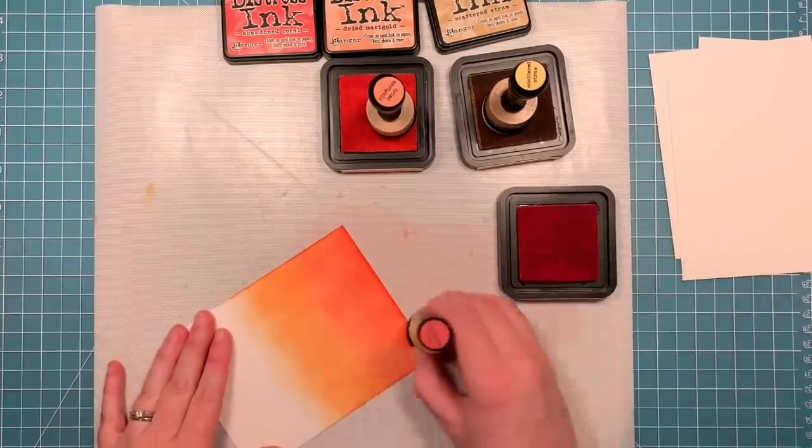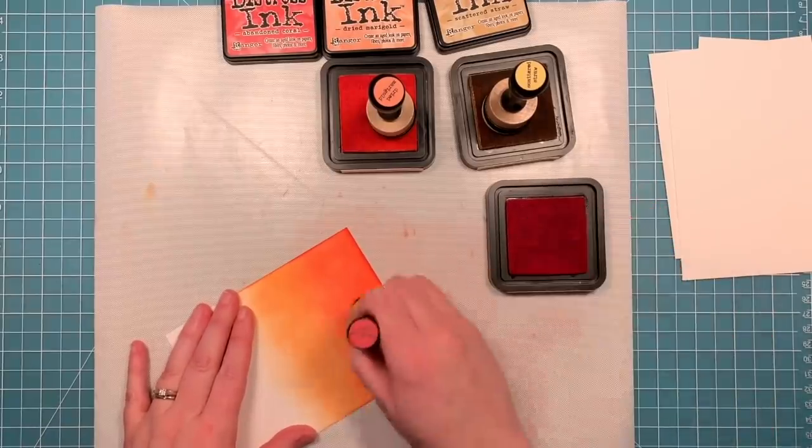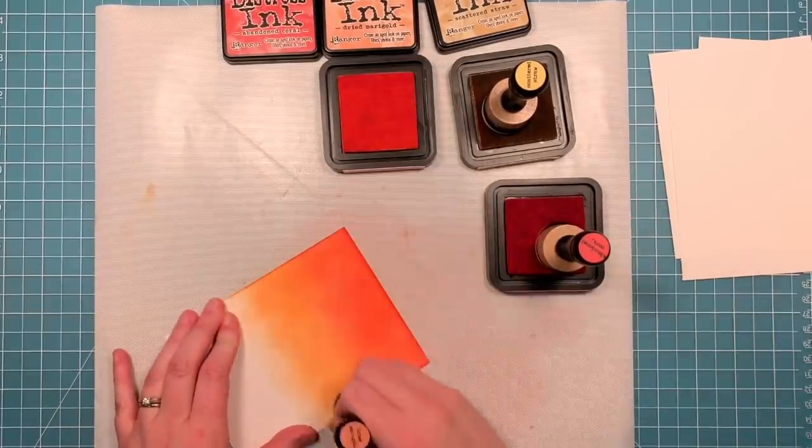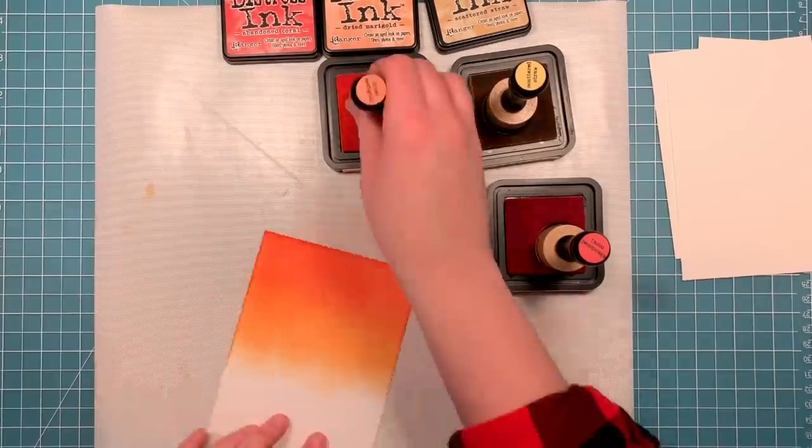Here I am with the abandoned coral again. You can see how that top's getting nice and dark and a lot of those smudges and strokes will eventually fade away as the ink dries and absorbs into the paper.